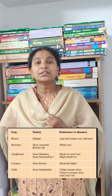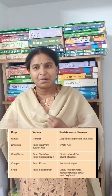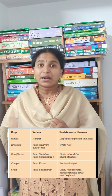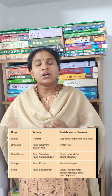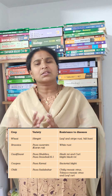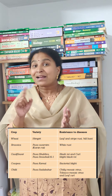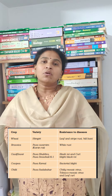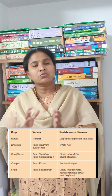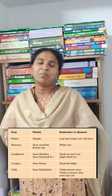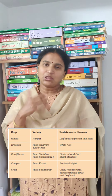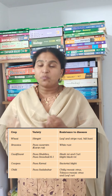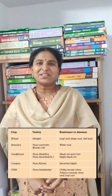Let us revise once again. Wheat variety Himgiri shows resistance against leaf rust, stripe rust, and hill bunt. Brassica variety — flowers are golden — Pusa Swarnim shows resistance against white rust. Cauliflower — Pusa Subhra and Pusa Snowball — show resistance against black rot and curl blight. Cowpea — very komal — Pusa Komal shows resistance against bacterial blight. Chili — throughout the year — Pusa Sadabahar shows resistance against chili mosaic virus, tobacco mosaic virus, and leaf curl virus.